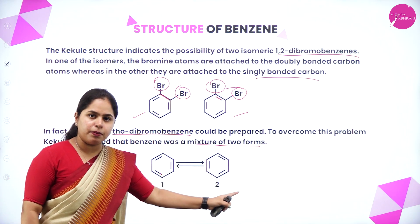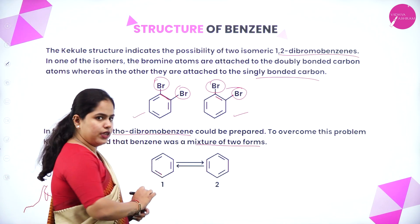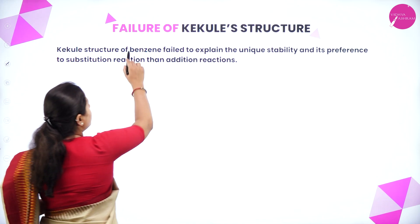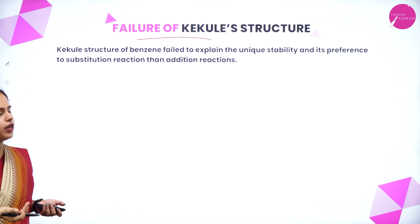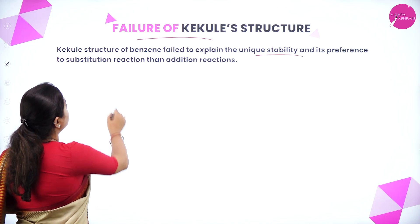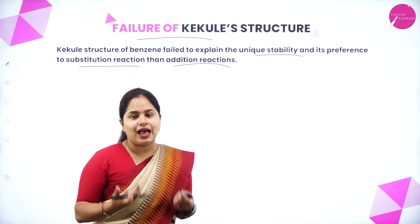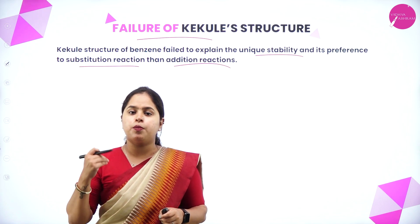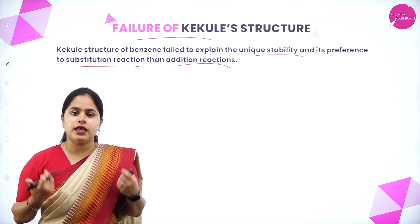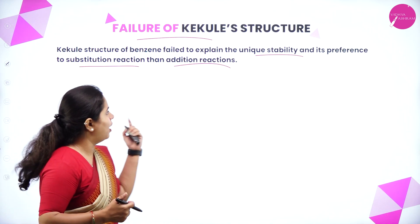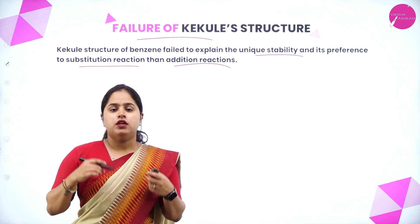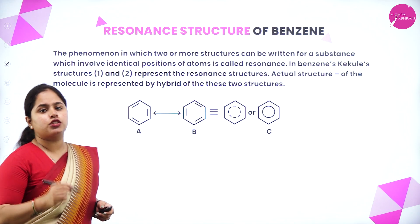So two structures are possible — this is what Kekulé concluded. However, there was a problem with the Kekulé structure: it failed to explain the unique stability of benzene and its preference for substitution reactions over addition reactions. Unlike alkenes and alkynes which prefer addition reactions, benzene-containing compounds prefer substitution reactions. Kekulé couldn't explain this, so the failure of the Kekulé structure led to the resonance structure of benzene.